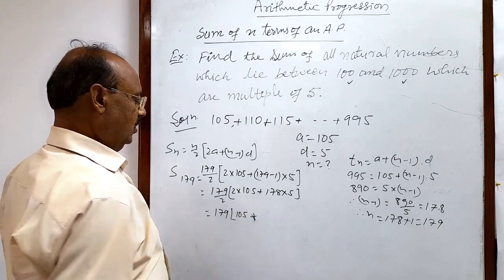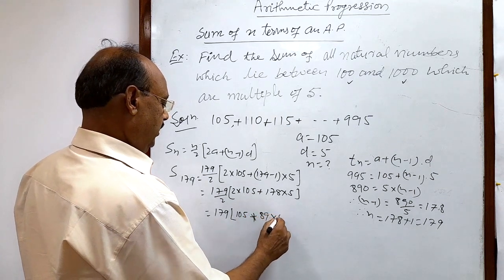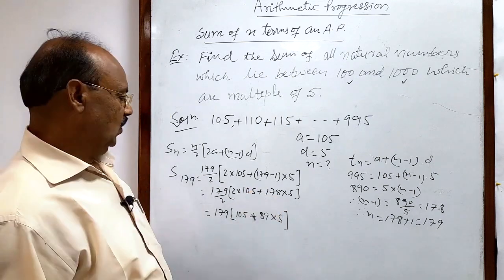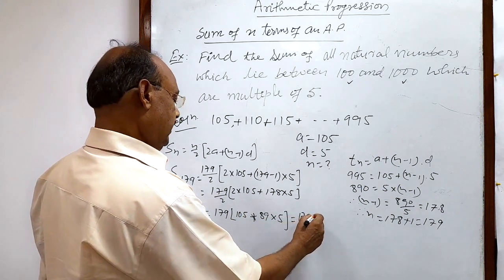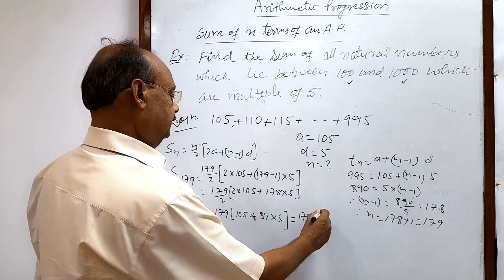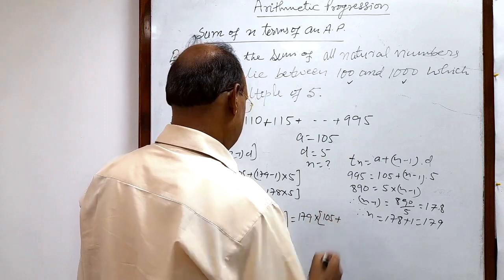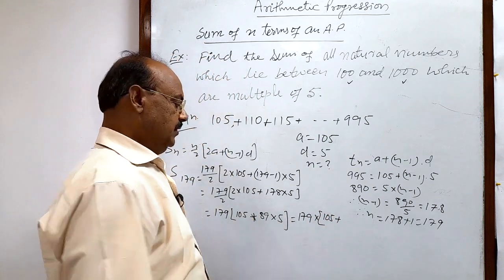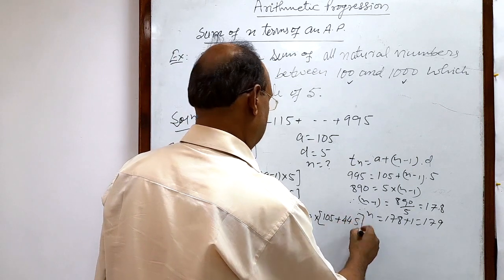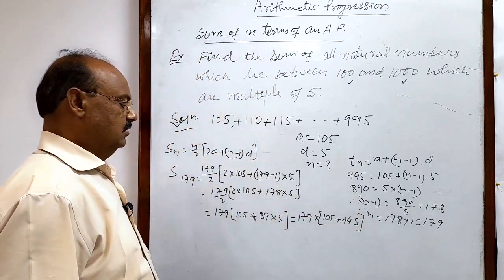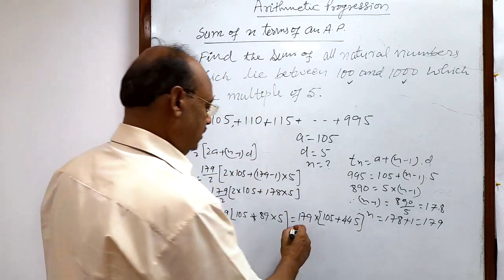Now simplify it. This is equal to 179 times (105 plus 89 times 5, which is 445). And this is equal to 179 times 550.